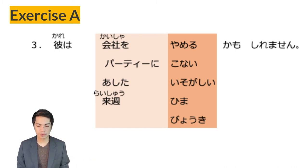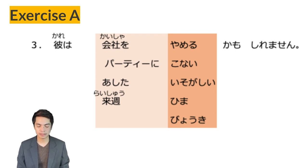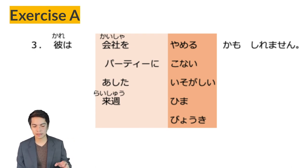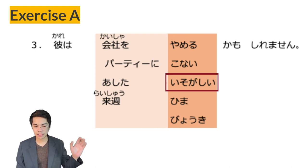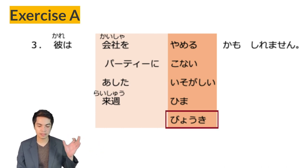Number three — guess sentences using kamoshiremasen: Kare wa kaisha wo yameru kamoshiremasen — 'Maybe he will resign from the company.' Kare wa paati ni konai kamoshiremasen — 'Maybe he won't come to the party.' Kare wa ashita isogashii kamoshiremasen — 'Maybe he is busy tomorrow.' Kare wa raishu hima kamoshiremasen — 'Maybe he is free next week.' Kare wa byouki kamoshiremasen — 'Maybe he is sick.' The pattern applies to verb dictionary form, verb-nai form, i-adjectives, na-adjectives, and nouns.